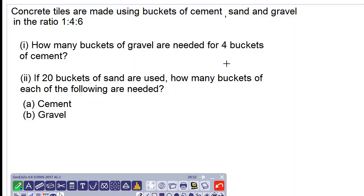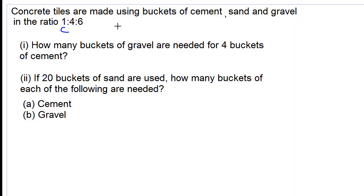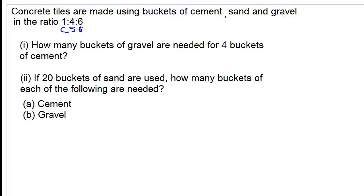Part 1: How many buckets of gravel are needed for four buckets of cement? Let's understand this ratio. The first number pertains to cement, the second number 4 is for sand, and the last number is for gravel. We follow the sequence of the words and relate them to the numbers in the ratio.